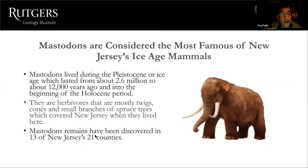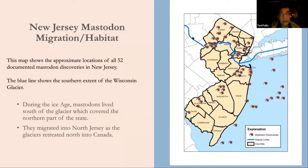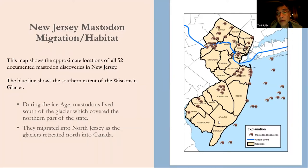The map shows all 52 documented mastodon fossil discoveries in New Jersey. The blue line shows the southern extent of the Wisconsin Glacier across northern New Jersey and out onto Long Island. During the ice age, mastodons lived south of the glacier. There are also mastodon finds out in what is now the Atlantic Ocean — not because they were swimming, but because the shoreline during the ice age was 70 to 80 miles farther offshore, as much of the ocean's water was locked up in frozen glaciers.